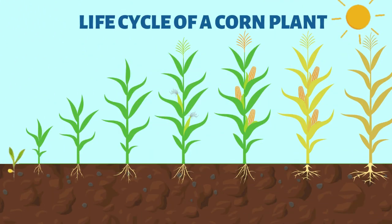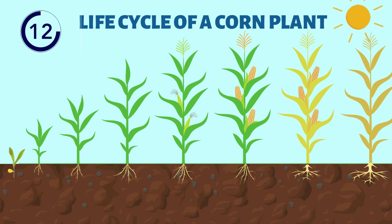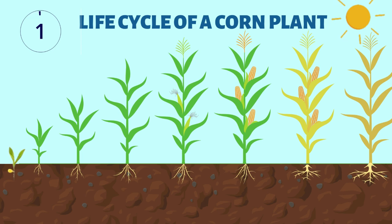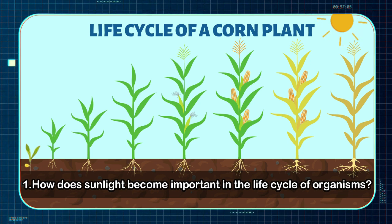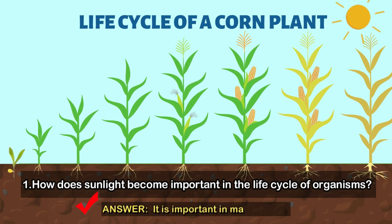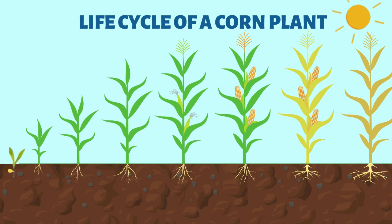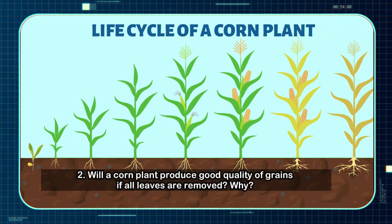Let's take a look at the stages of the life cycle of a frog. Question number one: How does sunlight become important in the life cycle of organisms? You're right! It is important in making food. Question number two: Will a corn plant produce good quality of grains if all leaves are removed? Why?